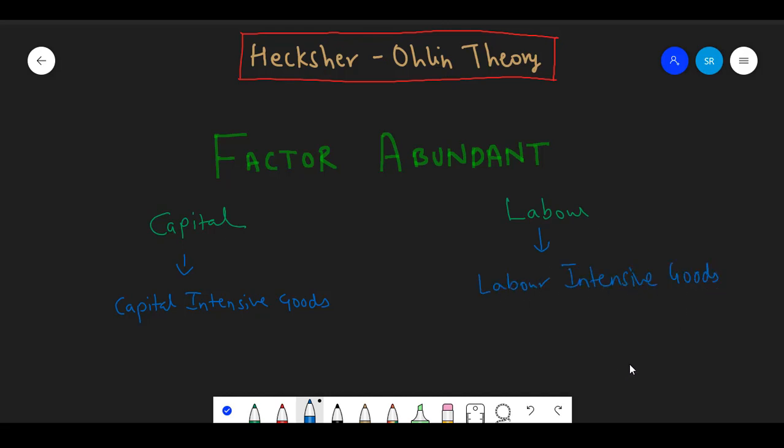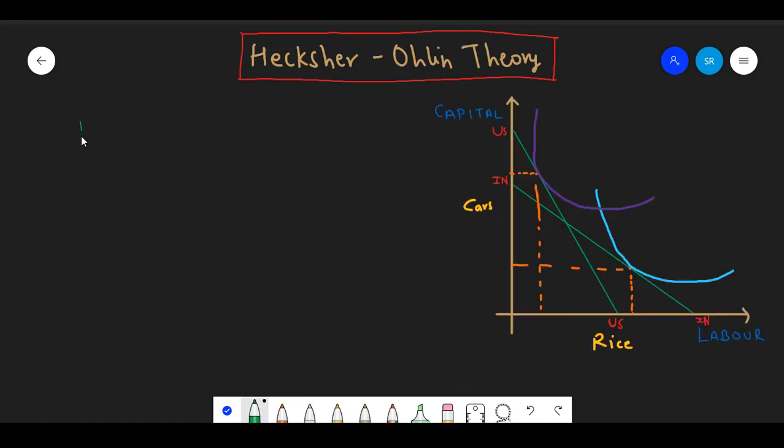Here we are dealing with only two factors, labor and capital, but we can show the same with more than two factors as well. Let us assume two countries, India and the USA. India is a labor-intensive country and USA is a capital-intensive country. We take two commodities, rice and car.